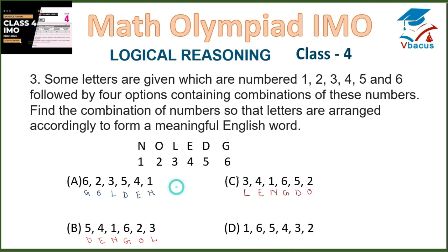Checking option C: 3 is L, 4 is E, 1 is N, 6 is G, 5 is D, 2 is O — spelling LENGDO, not a meaningful word. Option D: 1 is N, 6 is G, 5 is D, 4 is E, 3 is L, 2 is O — spelling NGDELO, also not meaningful. Only GOLDEN from option A is a meaningful word. So option A is the correct answer.